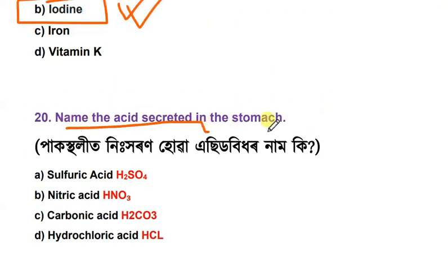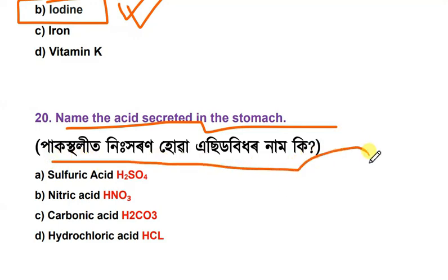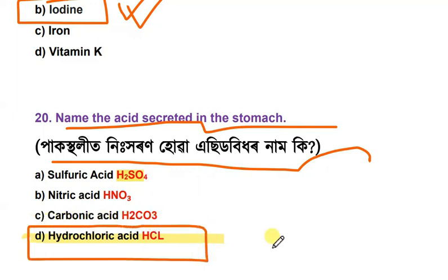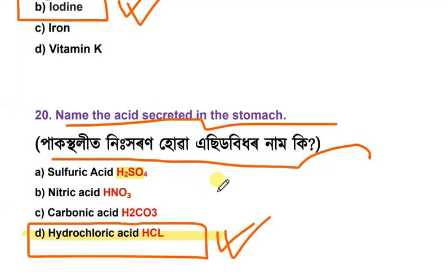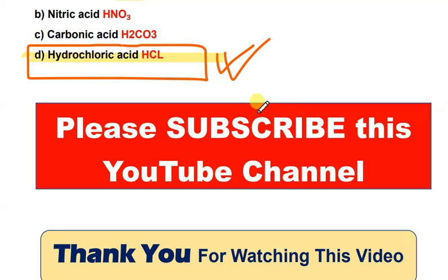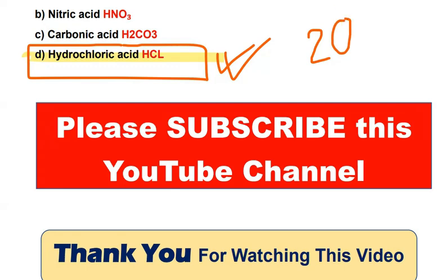Name the acid secreted in the stomach. The options are sulfuric acid, nitric acid, carbonic acid, and hydrochloric acid. The correct answer is hydrochloric acid — this is the acid secreted in the stomach.